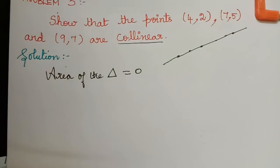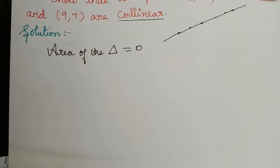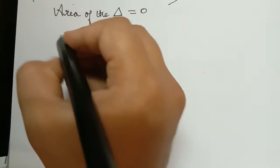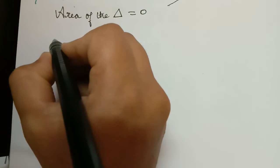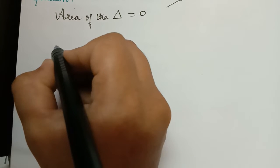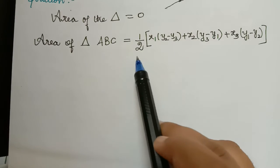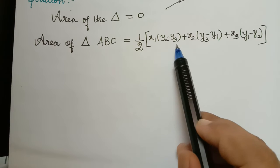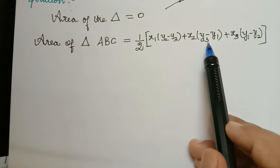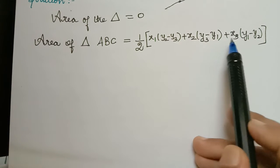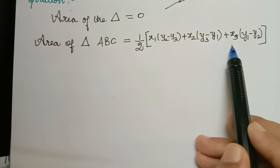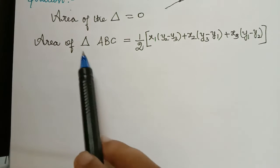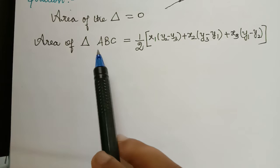In our previous video, we saw the formula for area of a triangle. The formula for area of a triangle is given by: one-half of x1 multiplied with (y2 minus y3), plus x2 multiplied with (y3 minus y1), plus x3 multiplied with (y1 minus y2). This is the area of the triangle.